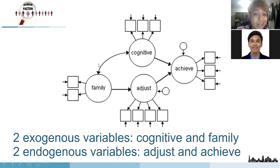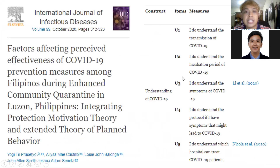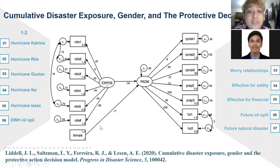The double-headed arrow between two variables represents covariance — similar to correlation analysis. The arrows for factor loadings go from the latent towards the indicators, while the beta coefficient arrows connect one latent to another latent. These are different types of paths with different arrowheads.